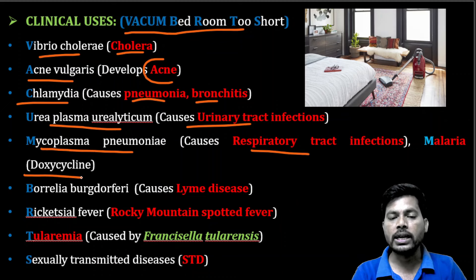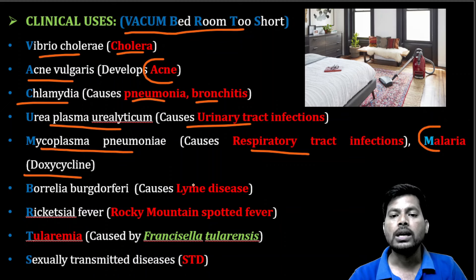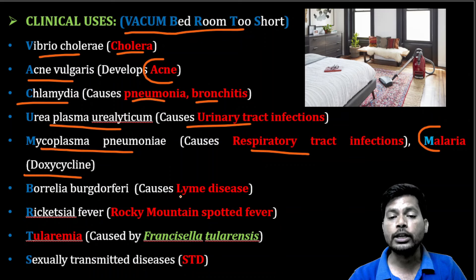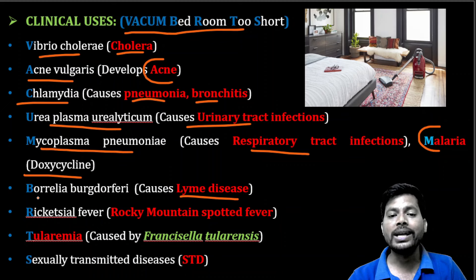Tetracycline, especially doxycycline, helps in the treatment of malaria by showing its effect on Plasmodium species. Tetracycline is also useful in the treatment of Lyme disease, a type of zoonotic disease, caused by Borrelia burgdorferi.